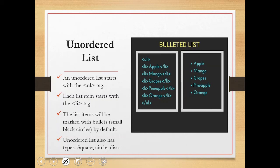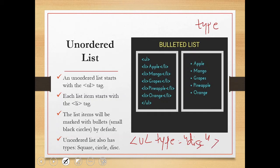To change the bullet style, we write an attribute called type inside the ul tag. For example, if I want disc, I write ul type equal to disc, then continue with my li tags and close the ul. The output will use a disc bullet instead of the default. Similarly, you can write type equal to square or type equal to circle. A demo of all these with their types will be in my next video.